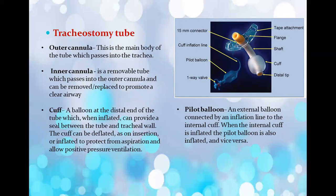The next question was an image-based question about the cuff of a tracheostomy tube. The cuff is a balloon at the distal end of the tube which, when inflated, provides a seal between the tube and the tracheal wall. The cuff can be deflated on insertion or inflated to protect against aspiration and allow positive pressure ventilation.